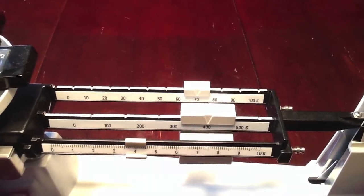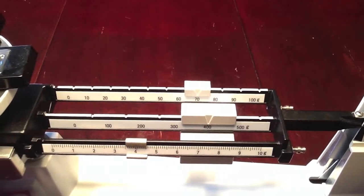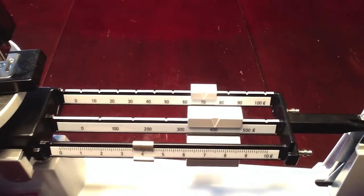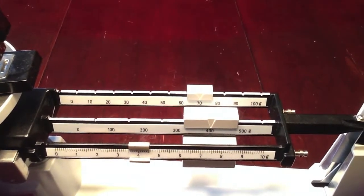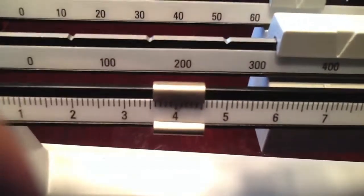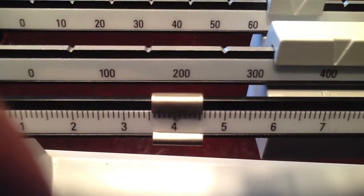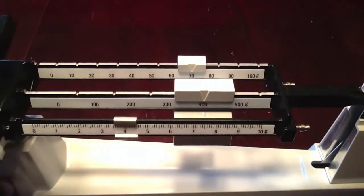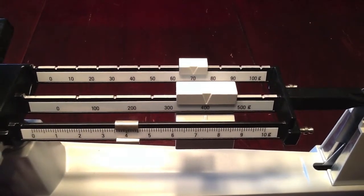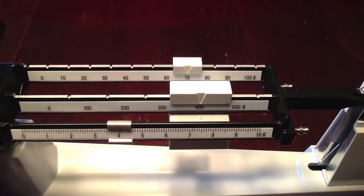Now we need to add and total the three riders together. Our 100 gram rider is at the 400 mark. Our 10 gram rider is at the 70 mark. And our 1 gram rider is exactly at 4 grams. So if we add the three together, we come up with a total mass of our stapler of 474 grams.